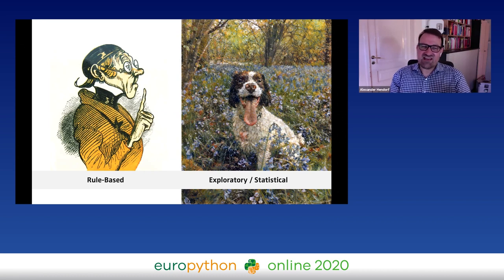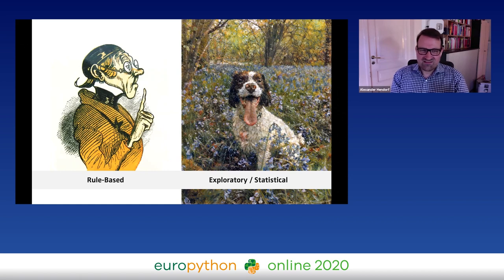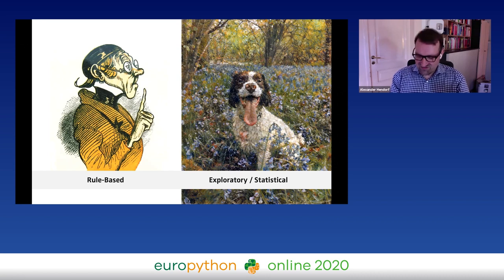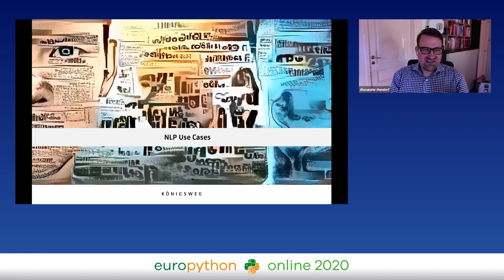There's also the statistical approach — like a field of data with many flowers and blossoms — and, of course, the dog won. I didn't find a better picture for this, so I used Ian Oswald's dog. Thanks, Ian.